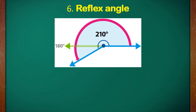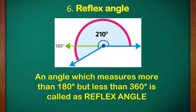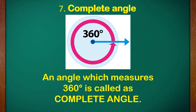Number six, reflex angle. An angle which measures more than 180 degrees but less than 360 degrees is called a reflex angle. It is a bigger angle — more than 180. You can see the diagram on the screen and observe what a reflex angle looks like. And number seven, we have complete angle. An angle which measures 360 degrees is a complete angle. You will see a full circle drawn there, showing that it measures 360 degrees.